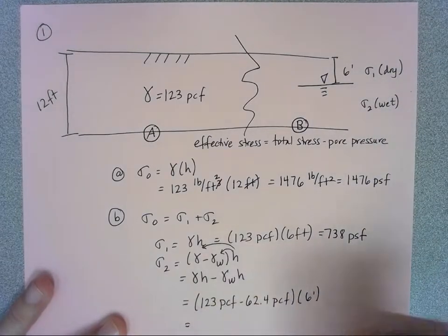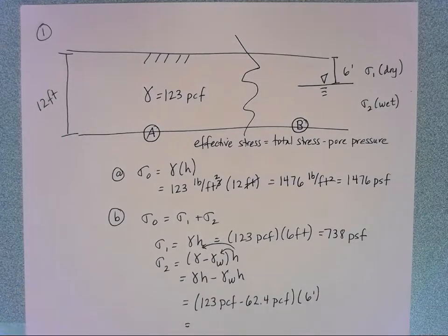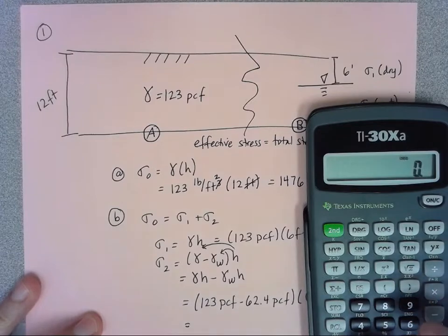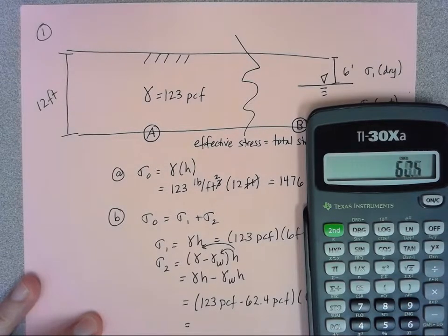And I go ahead and put that in my calculator. Remember when you're doing this in your calculator you want to make sure you do what's in the parentheses first, so 123 minus 62.4 and then I'm just going to multiply that by six.